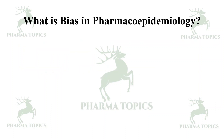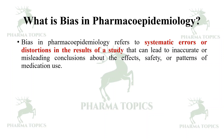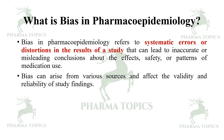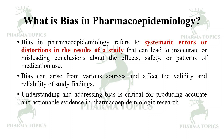What is bias in pharmacoepidemiology? Bias refers to systematic errors or distortions in the results of a study that can lead to inaccurate or misleading conclusions about the effects, safety, or patterns of medication use. Bias can arise from various sources and affect the validity and reliability of study findings. Understanding and addressing bias is a critical feature for producing accurate and actionable evidence in pharmacoepidemiological research.